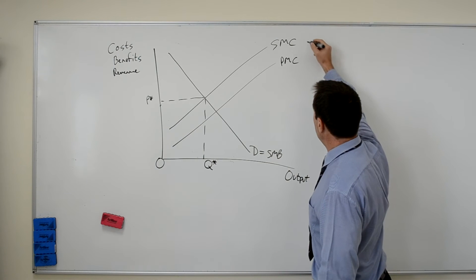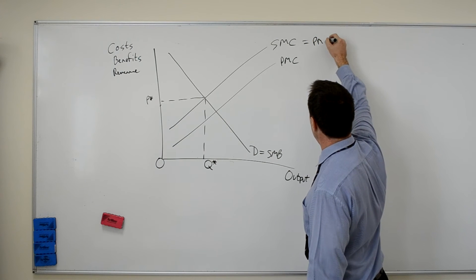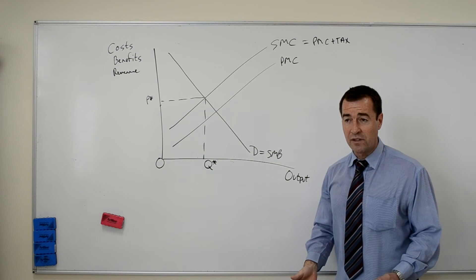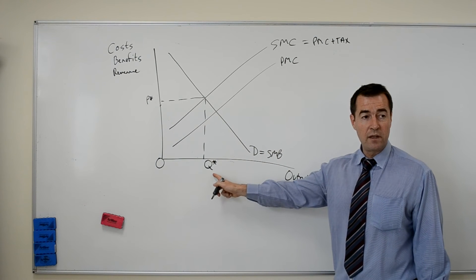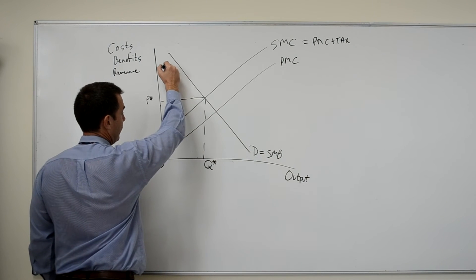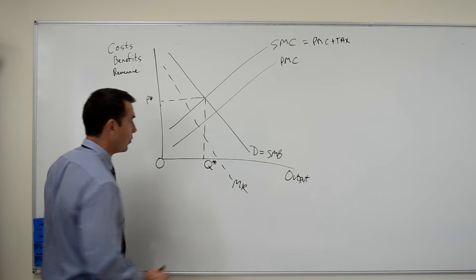SMC is now equal to PMC plus tax. But because the monopolist is a profit maximizer, we move further away from the optimum output level. Take a look at this. The marginal revenue curve, which I just drew,